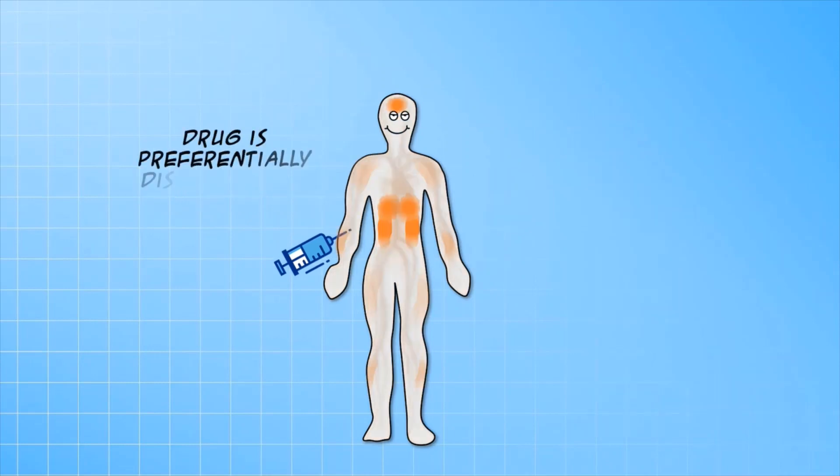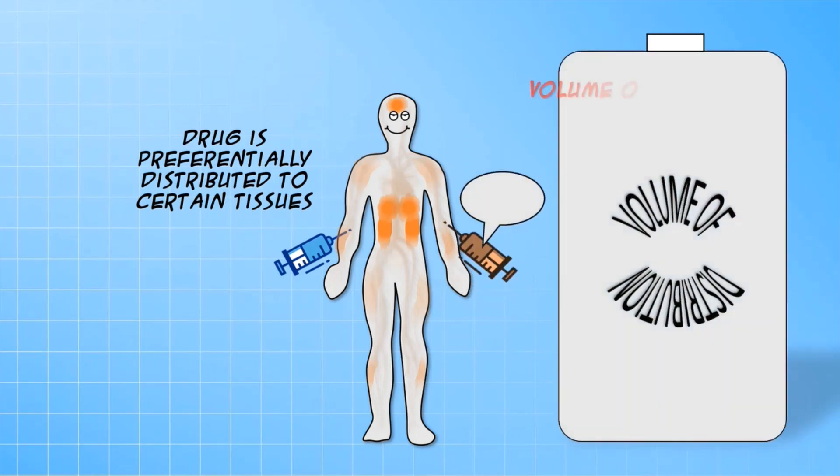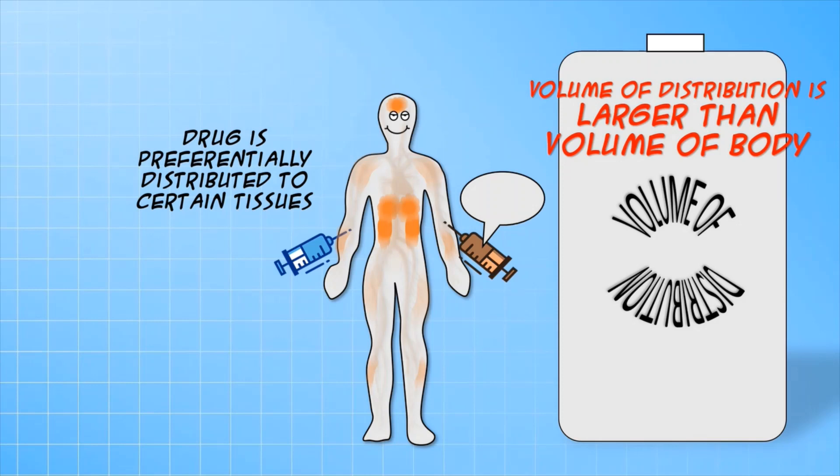Now in most cases, the drug is not distributed homogenously throughout the body, and may be preferentially trapped in certain tissues and organs. In such cases, the observed plasma concentration is very low, and conveys the impression that the volume of distribution is very large, and much larger than the physical volume of the body.